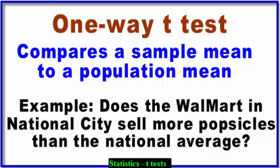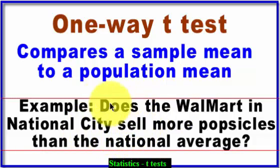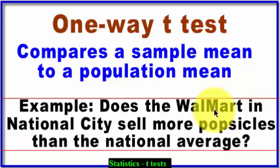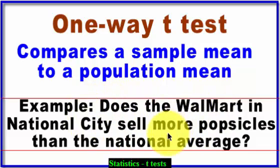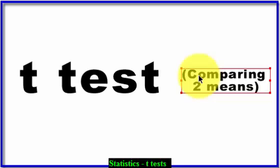Here's another example: does Walmart National City — that's your sample — sell more Popsicles than the national average? The sample mean is one Walmart and the population is all Walmarts. T-tests, remember, are comparing two means.